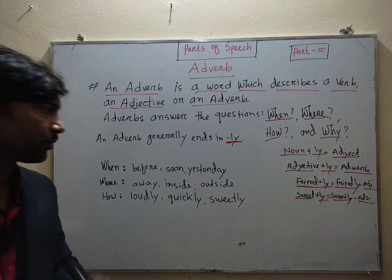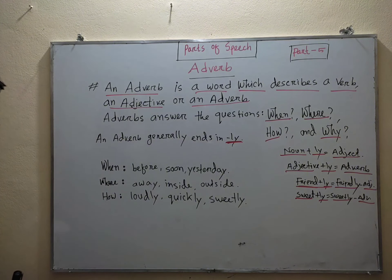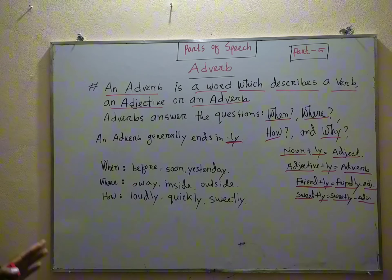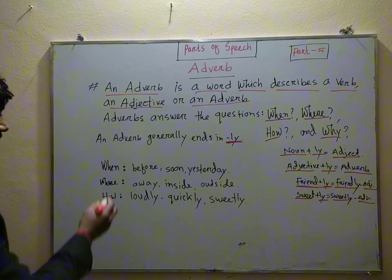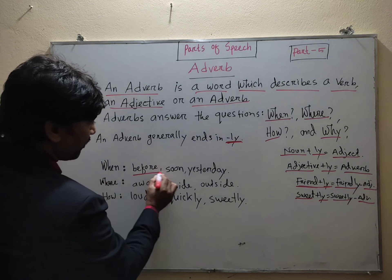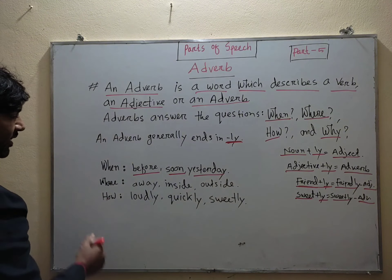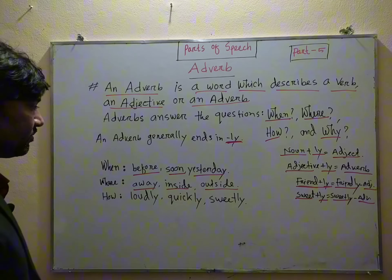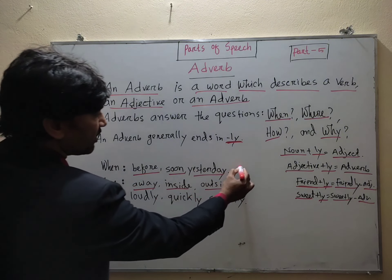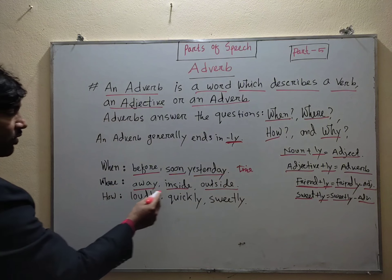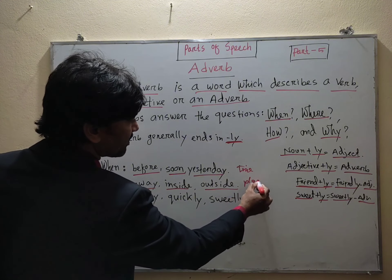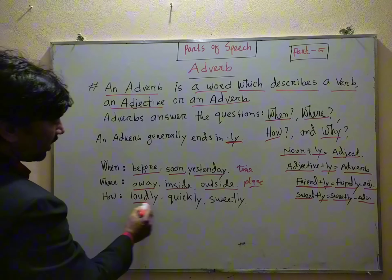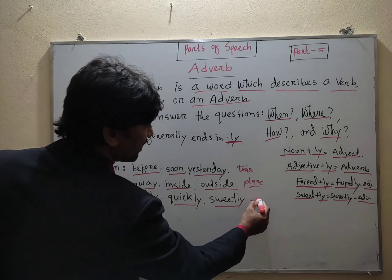When we ask the question 'when', the answers are words like 'before', 'soon', 'yesterday' — these are time adverbs. When we ask 'where', the answers are 'away', 'inside', 'outside' — these are place adverbs. When we ask 'how', the answers are 'loudly', 'quickly', 'sweetly' — these are manner adverbs.